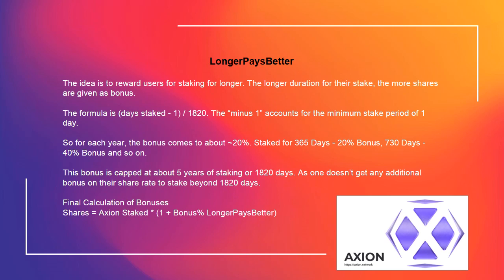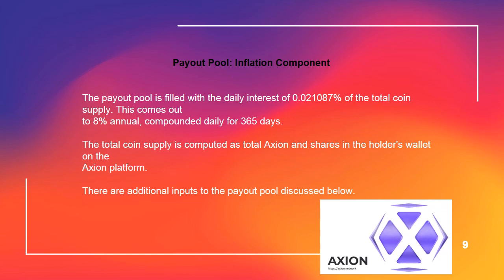One doesn't get any additional bonus on their share rate for staking beyond 1820 days. Final calculation of bonuses: shares equals Axion staked multiplied by (1 plus bonus percent from longer pays better). The payout pool is filled with the daily interest of 0.021087% of the total coin supply. This comes out to 8% annual, compounded daily for 365 days.